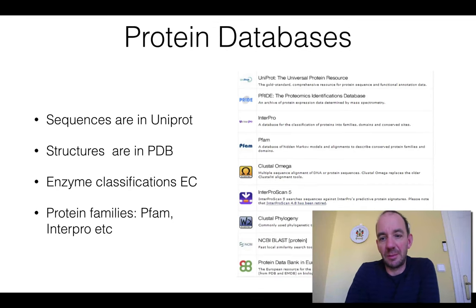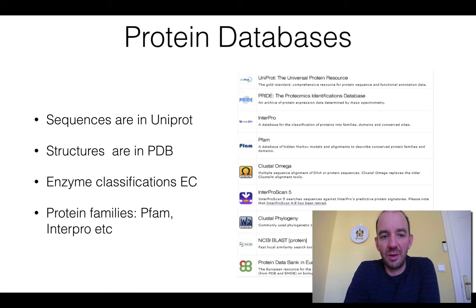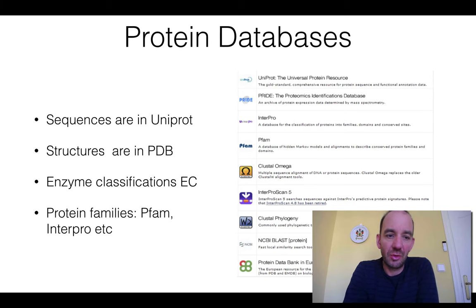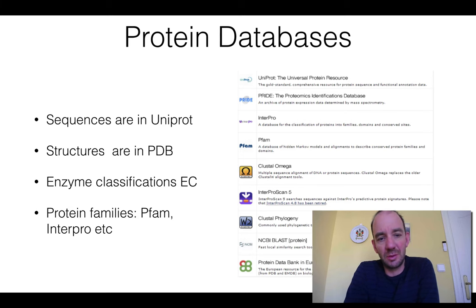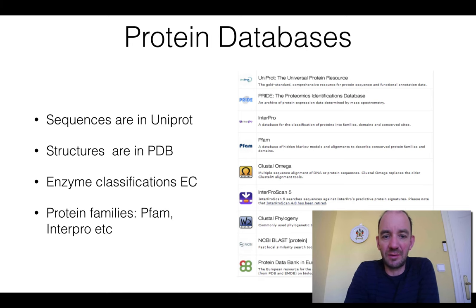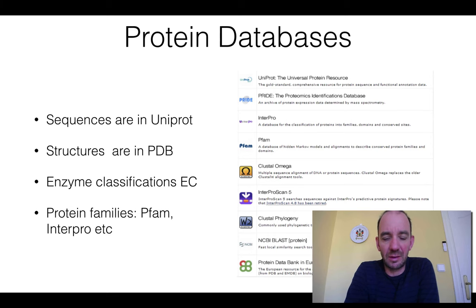There are several different protein databases. As with gene databases, there are both European and American versions, however most are now synchronized. UniProt is the main resource, and it is partly funded by the Americans. For protein sequences you go to UniProt, for structures you go to PDB, and for protein family classification there are many other databases that we will go through later in this course.